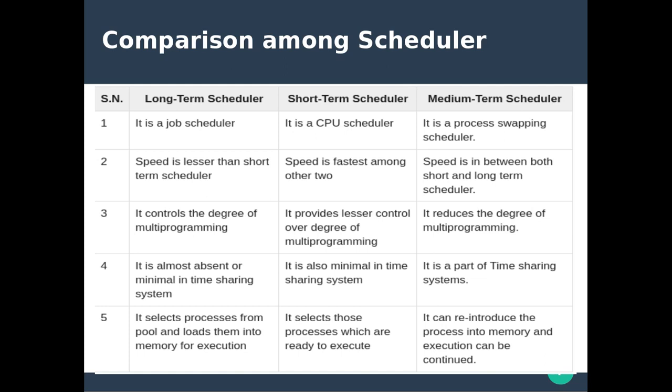The medium-term scheduler speed is lesser than the short-term scheduler but faster than the long-term scheduler — its speed is between both short and long term. It controls the degree of multiprogramming, while the short-term scheduler provides lesser control over the degree of multiprogramming.